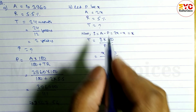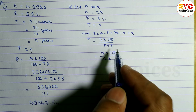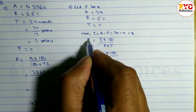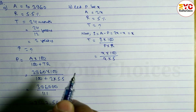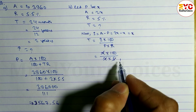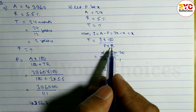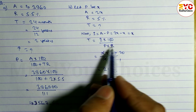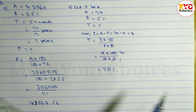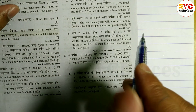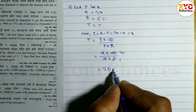Time ko formula: T = I × 100 divided by P × R. I ko value X cha, into 100, divided by P — P ko value X cha — into R — R ko value 5 cha. X and X cancel. So T = 100 divided by 5 = 20. B ko answer 20 years cha.